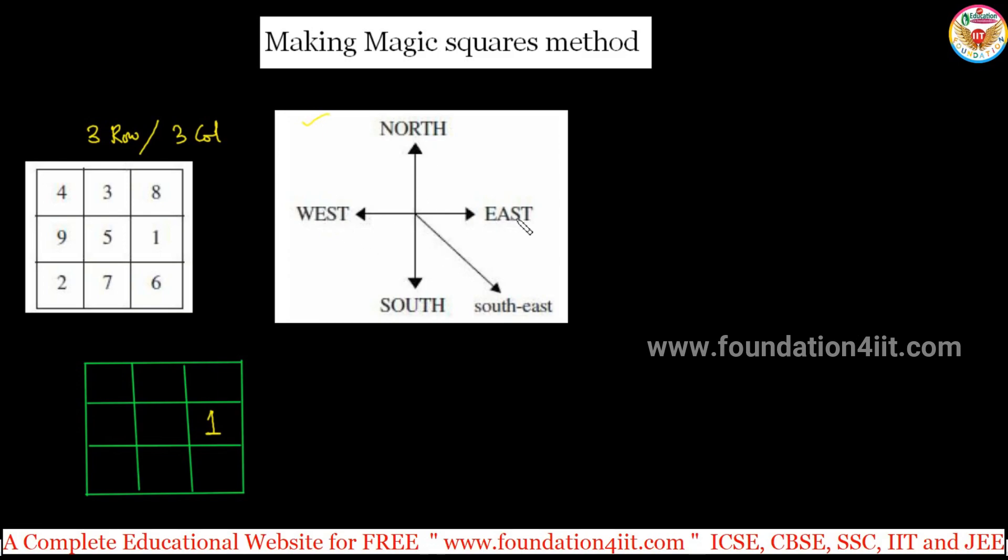Now, this is north, south, west, east. If you think, you have to start always the numbers northeast side, means cross. Now this is 1. From here we need to go for the cross.